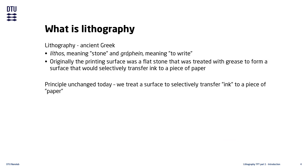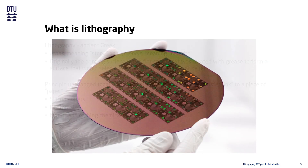Instead of stones, grease, and ink, we now use high purity crystalline silicon wafers, photosensitive polymer resists, metals, and strong etching chemicals. The modern semiconductor lithography process is used for producing devices with intricate patterns and extremely small features. These devices are the foundation of all modern electronics.